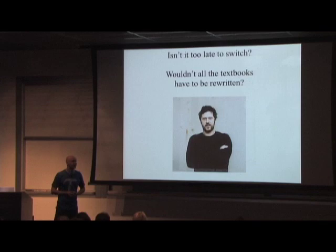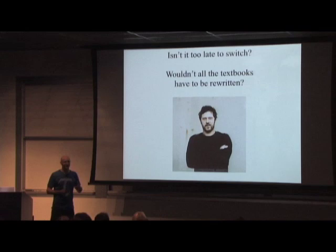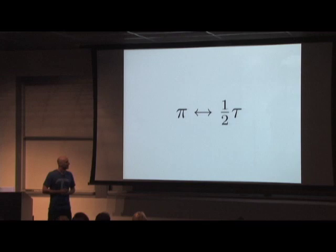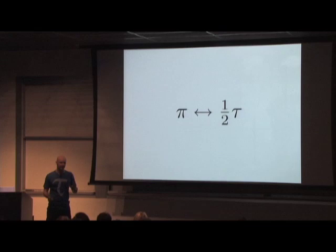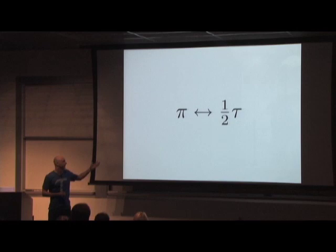Some people say: I'm convinced you're basically right, but isn't it too late to switch? Don't rewrite all the textbooks — too much trouble. But the thing is, we don't actually have to rewrite all the textbooks. Unlike redefining pi or changing a convention like the sign of charge carriers in electrical engineering, we can actually make this change on the fly. Pi and τ/2 can be converted into each other, so you can start using tau now incrementally, and still translate the old textbooks as necessary. It doesn't have to happen all at once.